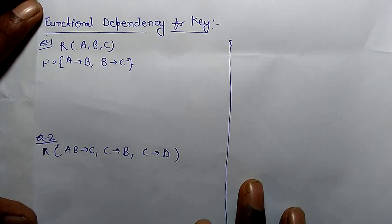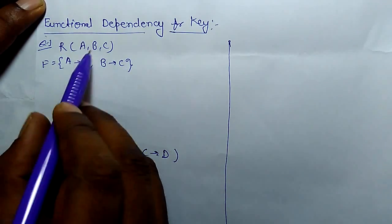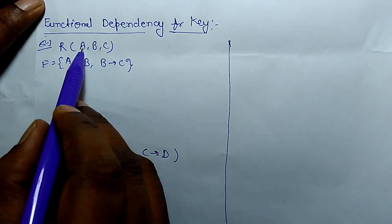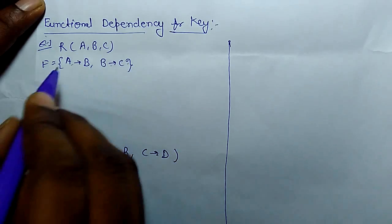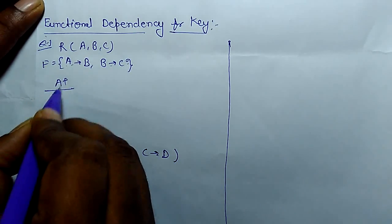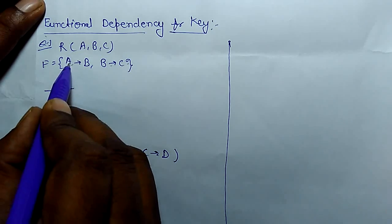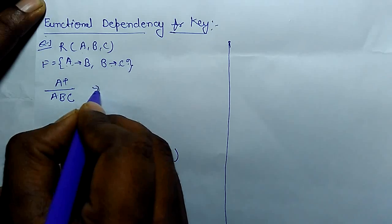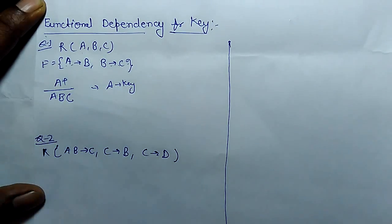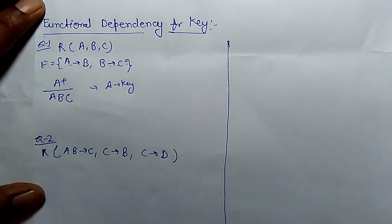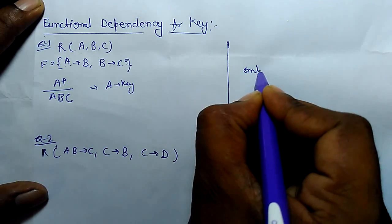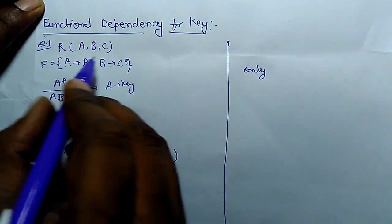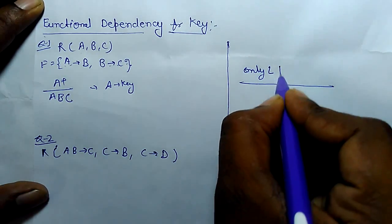Now, regarding functional dependency for a key: if there is a relation R with attributes A, B, C where A determines B and B determines C, the A closure gives A determines A by reflexivity, A determines B, and A determines C by transitivity. So A determines all three attributes and A can be a key. There is another technique to decide which attribute will be part of a key and which will not.